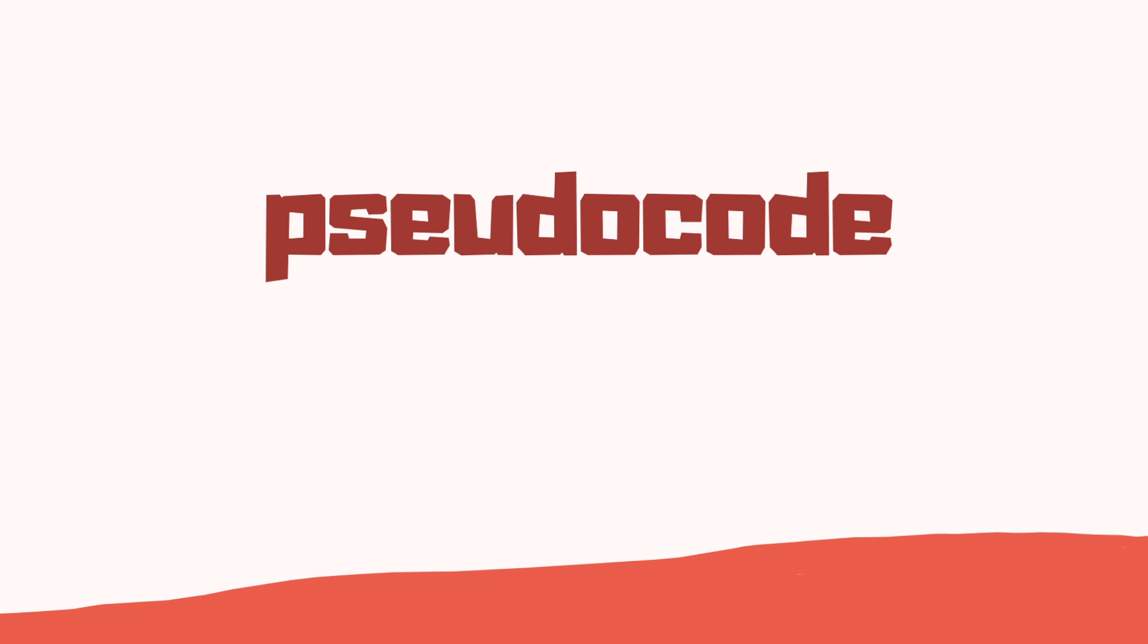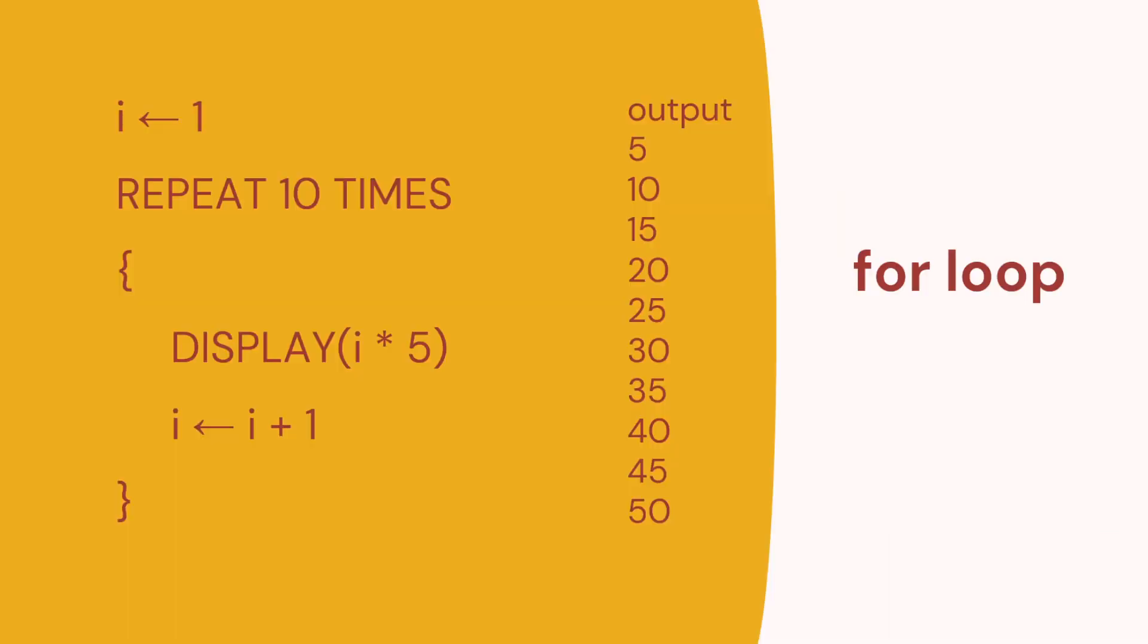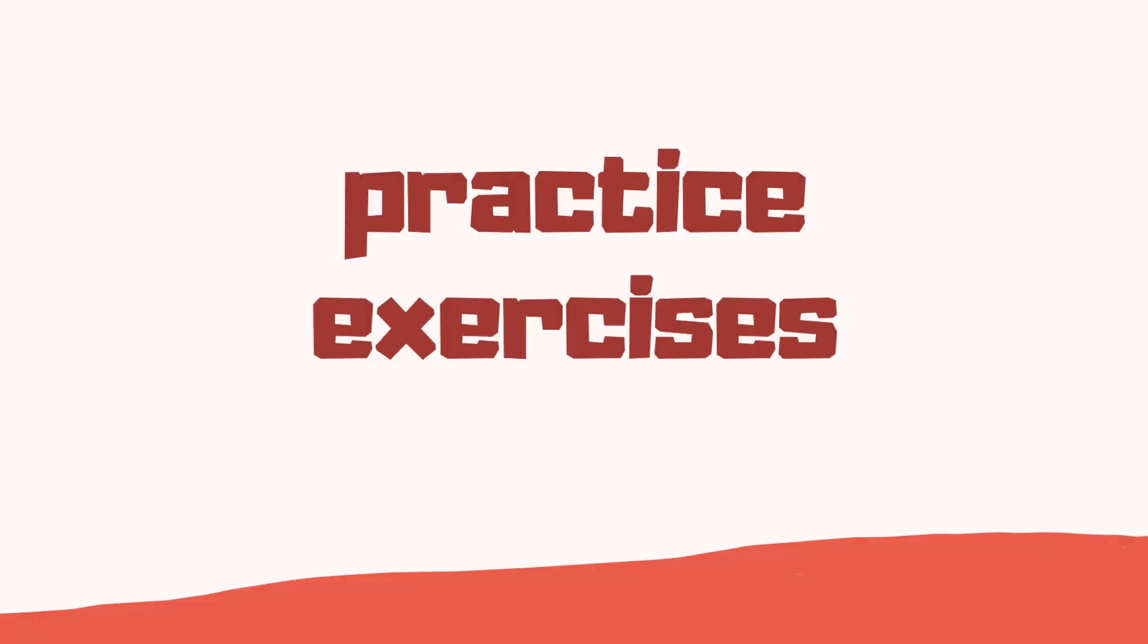Let's look at the pseudocode. Here's a for loop. We use the repeat word, with display inside the brackets. So that outputs 5 times table, 5 to 50, 10 times we've multiplied I by 5. And the while loop, similar, we use repeat until. Let's look at some practice exercises.